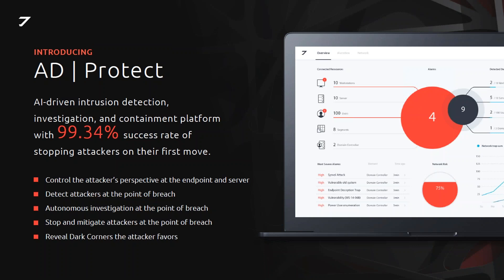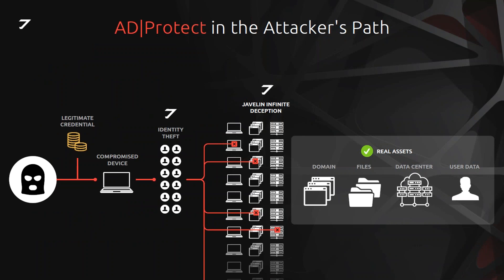The second core technology in the Javelin platform is AD Protect. AD Protect is designed to be an autonomous intrusion detection and containment system. We employ technology to control the attacker's perception of the domain environment and use that perception against them. As they try to learn about critical servers — database servers, file servers, privileged user groups, domain admins, software versions, running processes — we are controlling the answers to this reconnaissance.